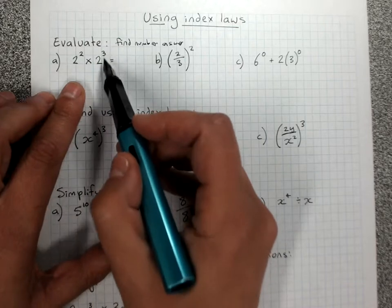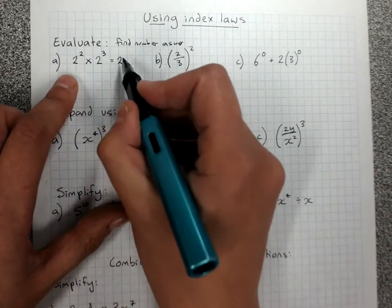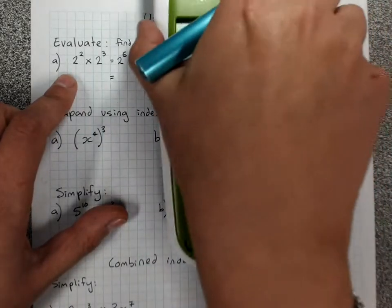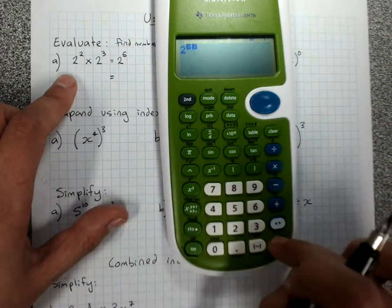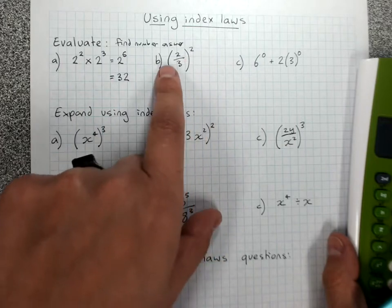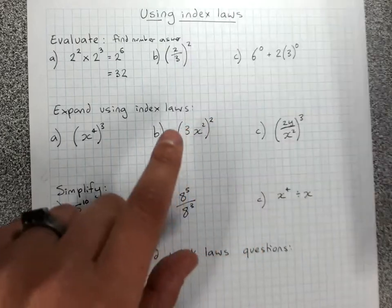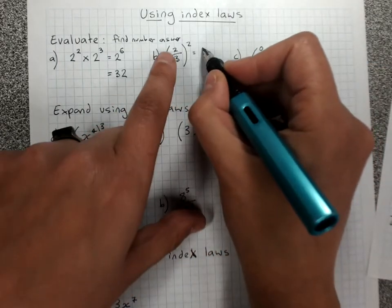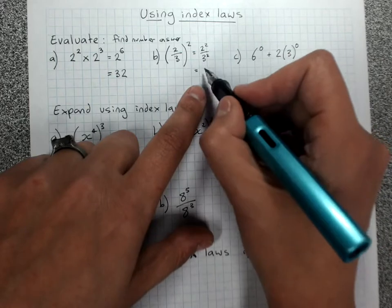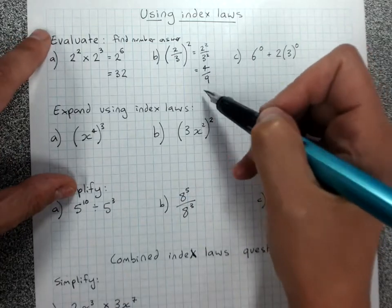For example, 2 squared times 2 to the 3 — same base number, multiplied — that's index law 1. Same base number, add the powers. Evaluate means get a number answer: 2 to the power of 5 is 32. Another example: 2 squared is 4, 3 squared is 9, because they wanted me to evaluate — get a number or fraction answer.